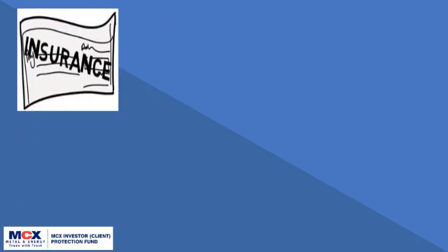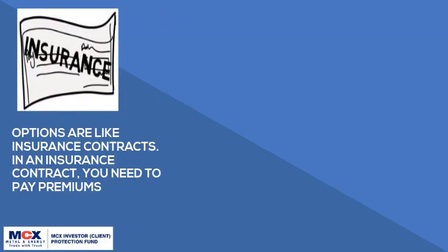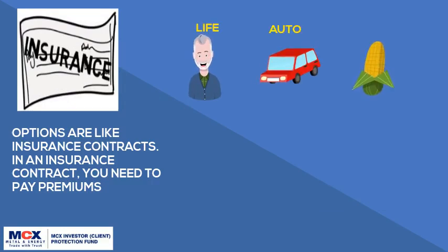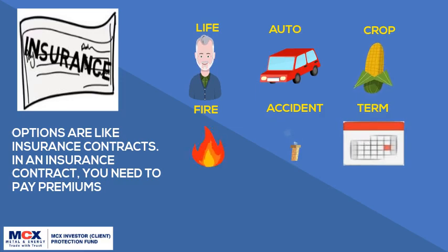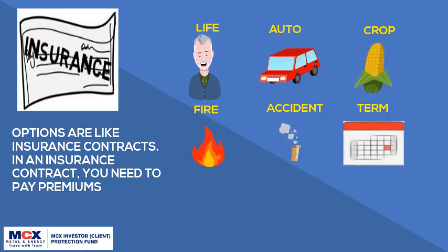In an insurance contract, you need to pay premiums for protection against unforeseen circumstances. These could cover life, auto, crop, fire, accidents, and so on. Options are like insurance contracts where you pay a premium to protect against unforeseen price movements.